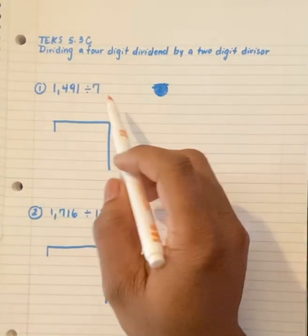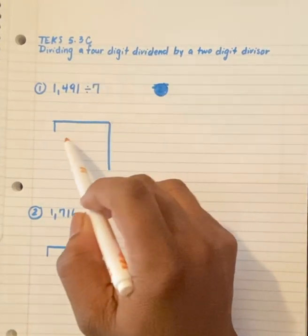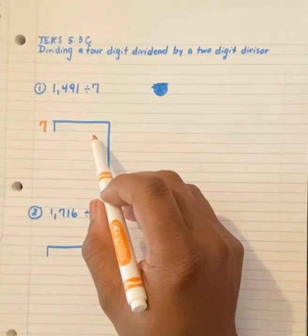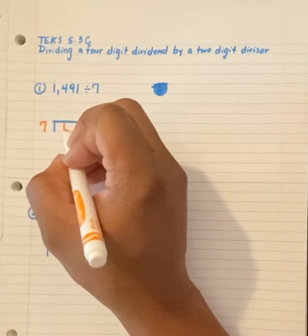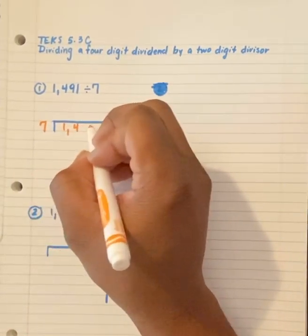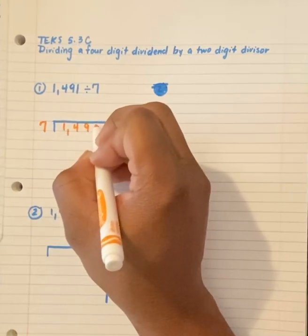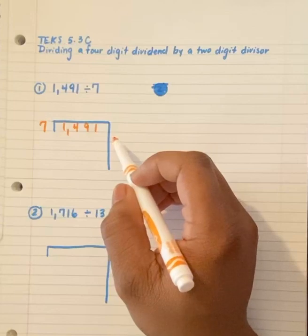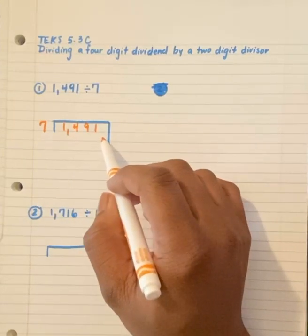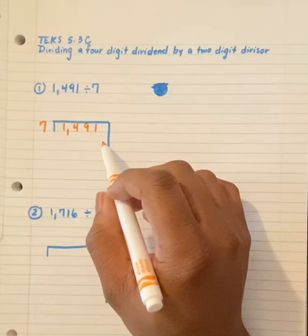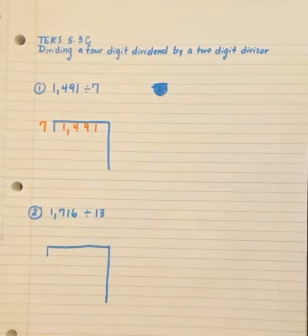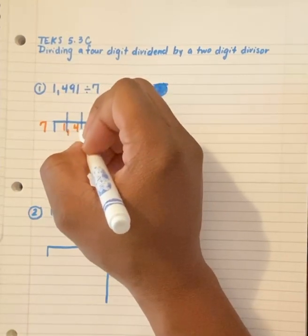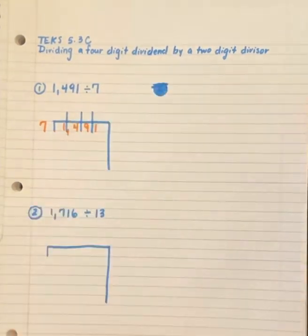So my divisor will go on the outside of the house. Inside the house will be my dividend, $1,491. What I always like to do is create a place value chart above my dividend so that I don't accidentally place numbers in the wrong place value. So create me a little line in between each digit.